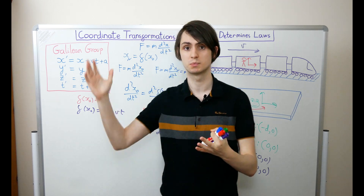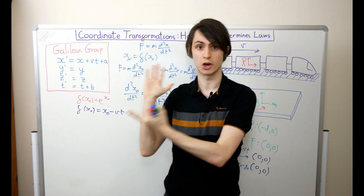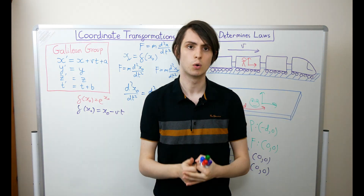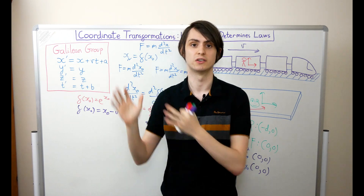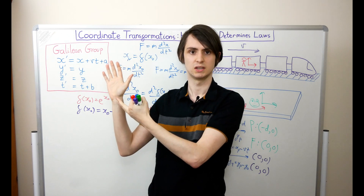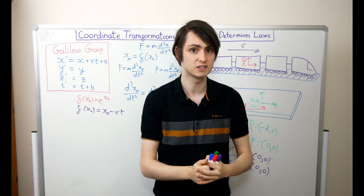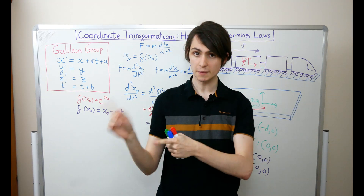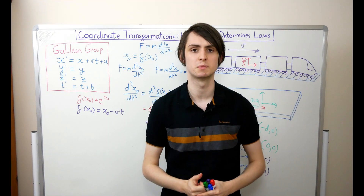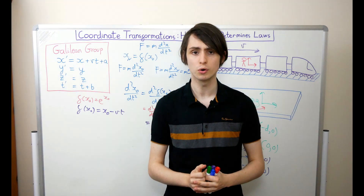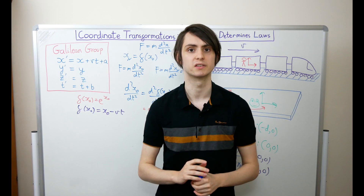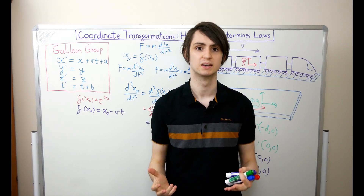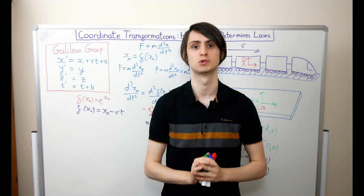If the Galilean transformations preserve your laws of physics, then your laws could be Newtonian — but we know they couldn't be electromagnetic, since the laws of electromagnetism are not preserved under Galilean transformations. If you know what transformation preserves your laws of physics, you've made a big step toward figuring out what those laws are. In the next episode we'll look at what the symmetries of our spacetime actually are and what coordinate transformations they allow — leading us to understand what form the laws of physics must take and bringing us right to the doorstep of special relativity.